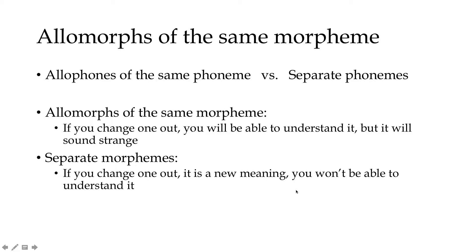So 'walks' versus 'walked' — if I switch out that S for the D, 'walks,' 'walked' — S is not just a different allomorph of the same morpheme. S is the morpheme which means third person singular present tense. D is the morpheme which means past tense. Switching them out shows these are two totally different morphemes, not just different pronunciations of the same one.